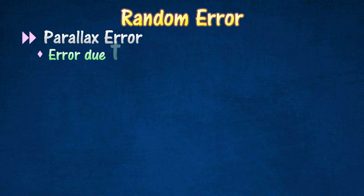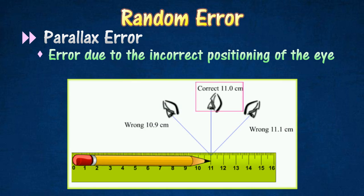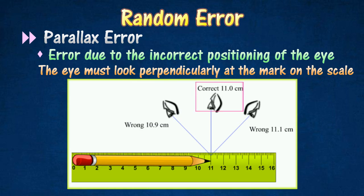Parallax error is a random error due to the incorrect positioning of the eye when taking a reading. To avoid parallax error, the eye must look perpendicularly at the mark on the scale while a reading is being taken. Figures show the correct way to read the scale on a meter rule.